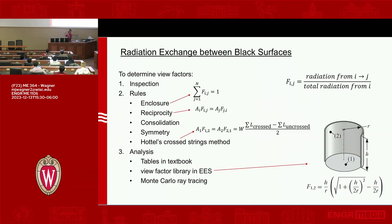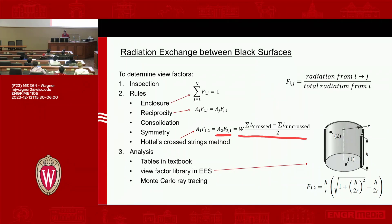Consolidation means if you know the view factor to a total area, you can split it up, or if you know view factors to constituent areas, you can add them together. Symmetry means if you have a symmetric case, the view factor will be the same. The cross-string method is given by its formula — remember that it's area times view factor that equals that expression, so don't forget the area term. Finally, analysis means going to a view factor library or doing ray tracing to evaluate the view factor.